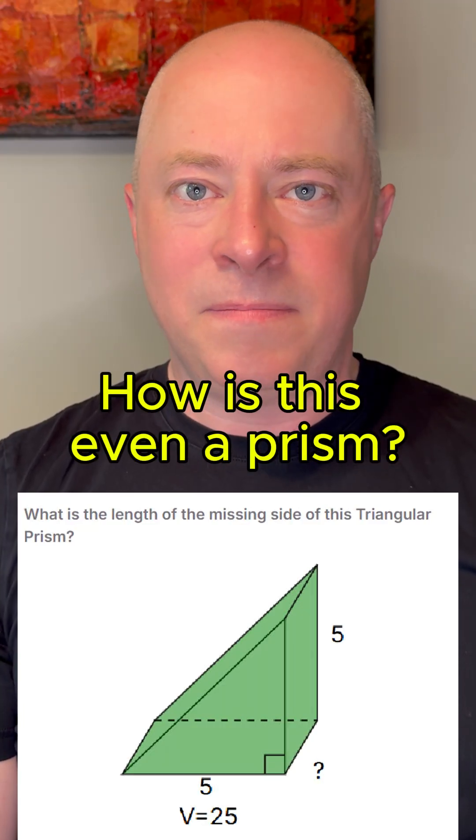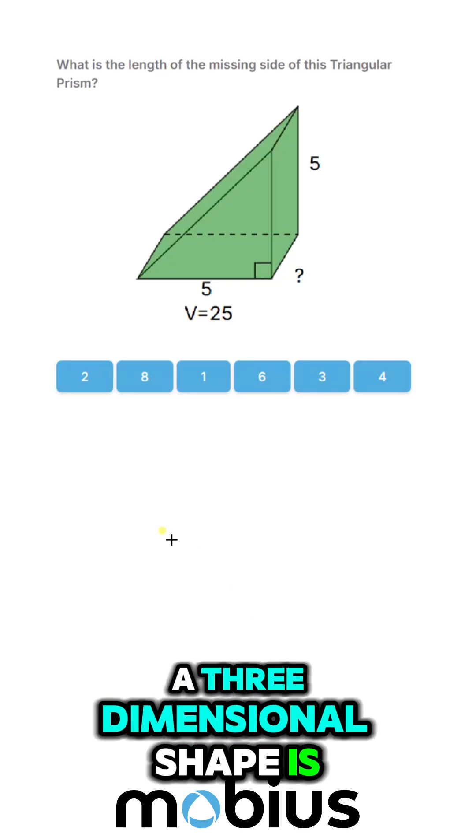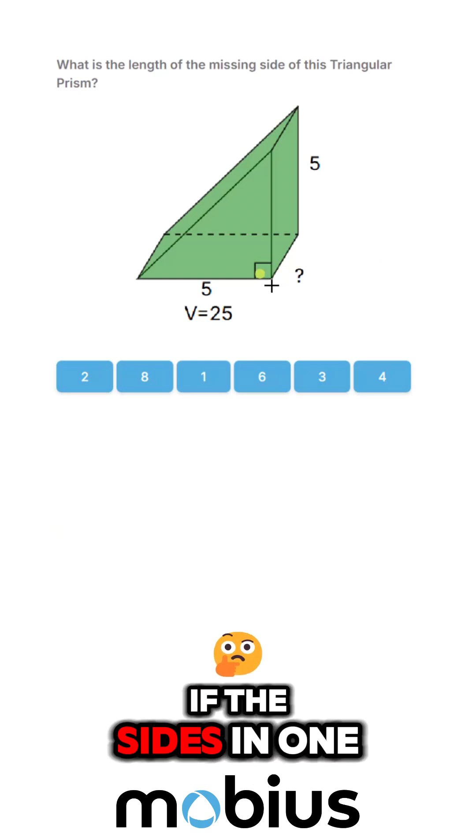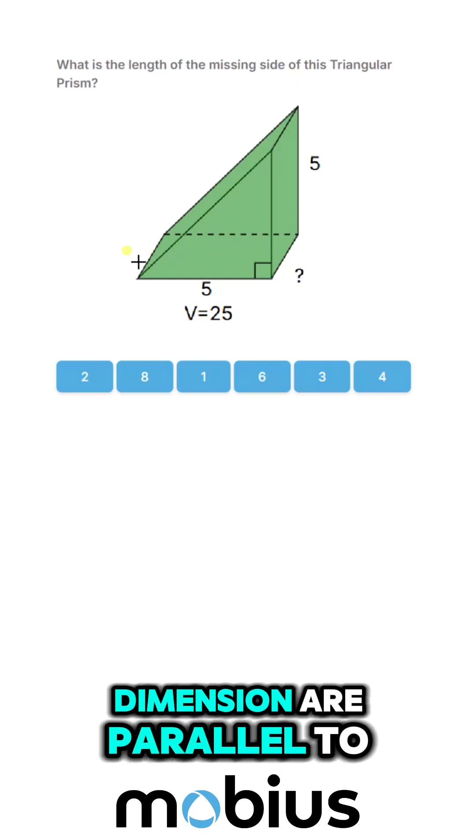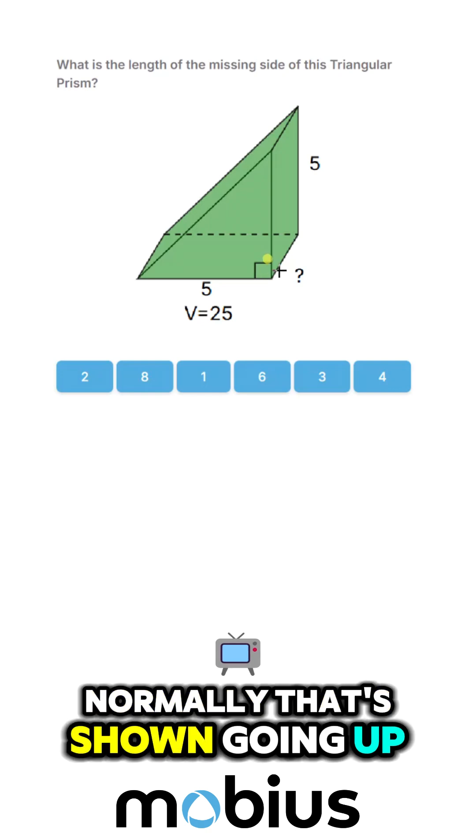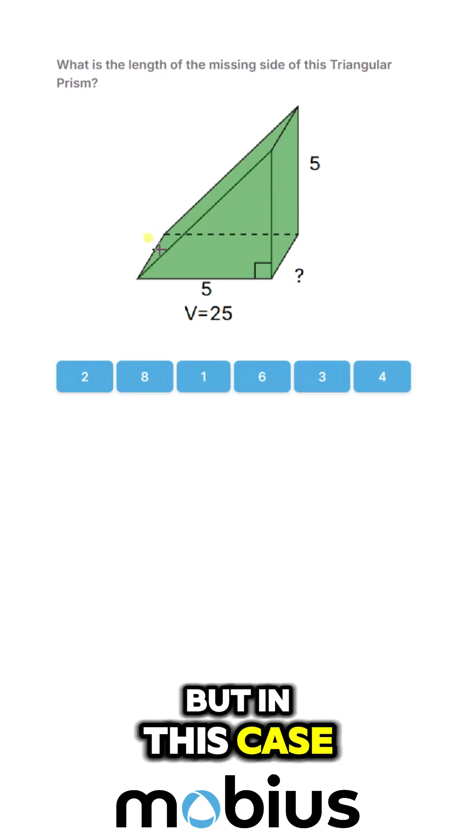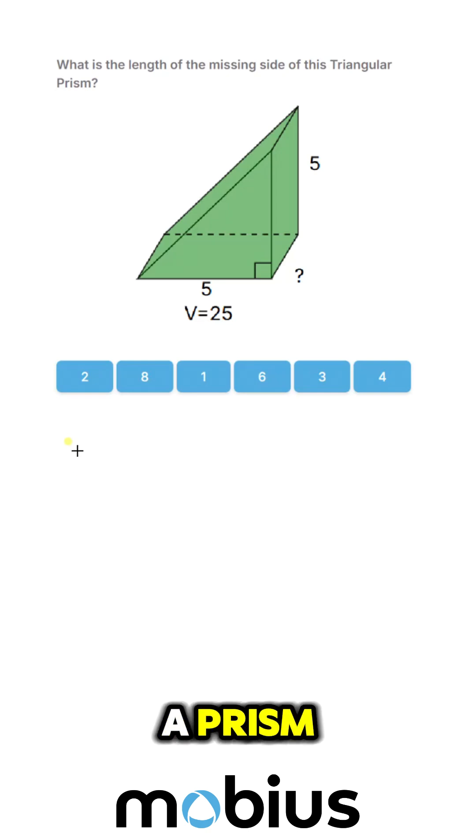How is this even a prism? The three-dimensional shape is a prism if the sides in one dimension are parallel to each other. Normally that's shown going up and down, but in this case the sides parallel are going back. So it definitely is a prism.